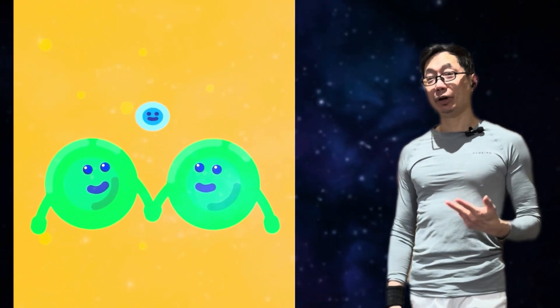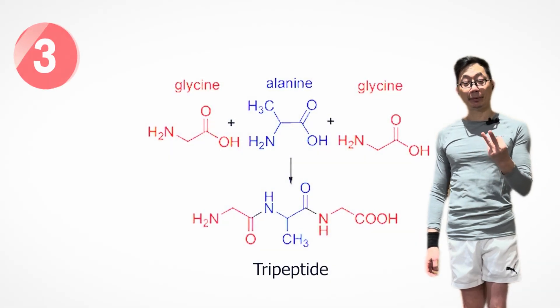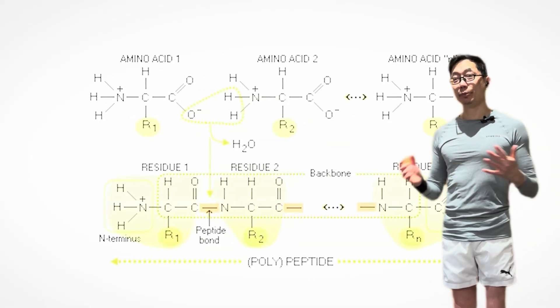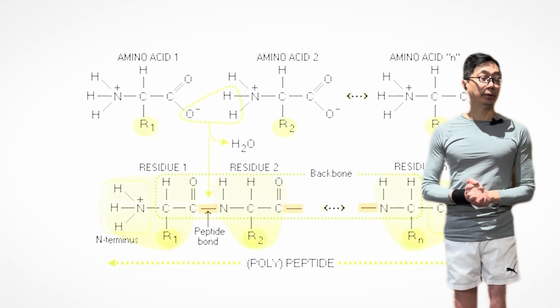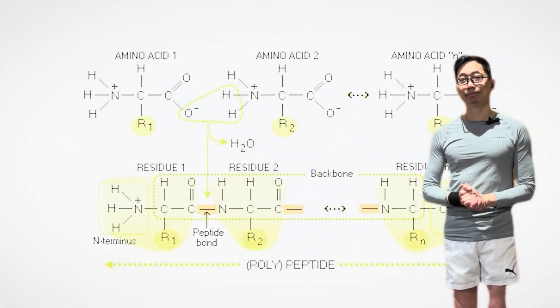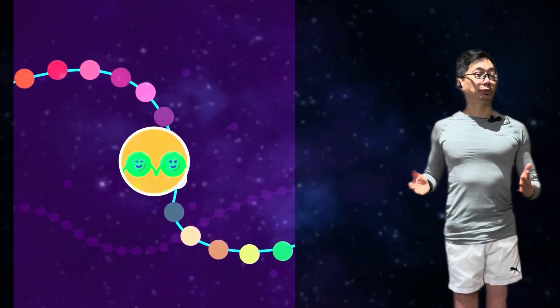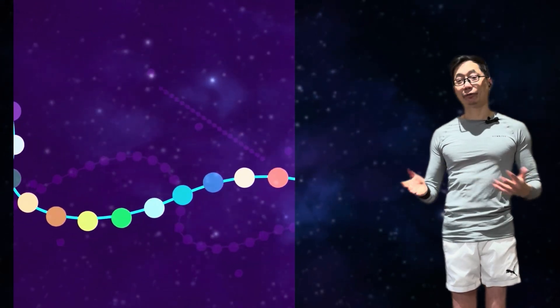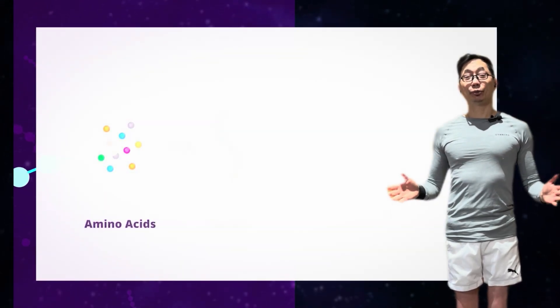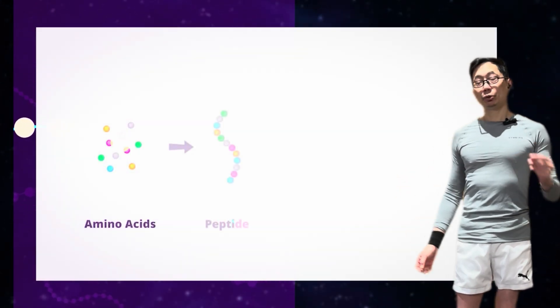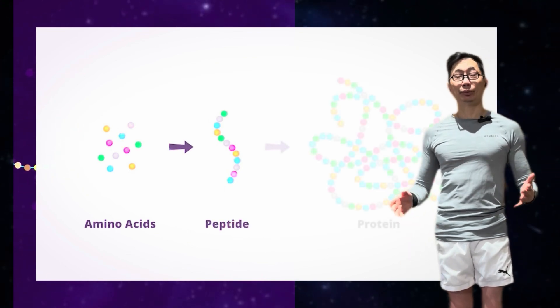You could create a dipeptide, which is two amino acids strung together, or a tripeptide, which would be three amino acids strung together, all the way up to amino acids strung together, creating large peptides called polypeptides. And then these polypeptides get folded and orientated in specific shapes, and you can build a full protein. So pretty much you can go from amino acid to peptide to protein.